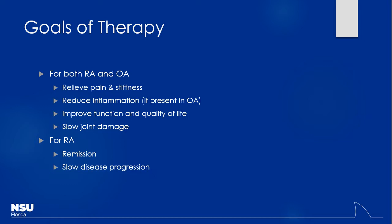Especially for rheumatoid arthritis, we would like to slow joint damage as much as we can. It's going to be less of a pharmacologic concern for OA, but certainly for RA, this is mainly where drugs are helping out the most. For RA, if they're having a flare-up, we can do things to decrease inflammation acutely — that's where pulse dosing of steroids is really important. Slowing down disease progression is the biggest thing we're focusing on.